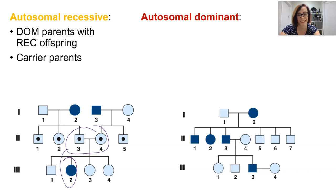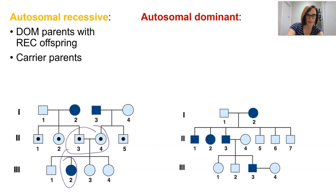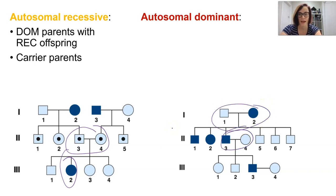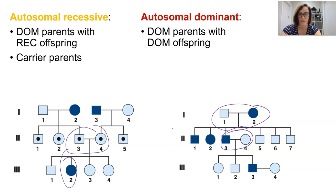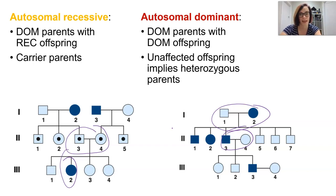In autosomal dominant inheritance, you'll see something similar, but since the affected trait is the dominant trait, we'll see parents that may themselves be dominant, and we will have dominant offspring as well. It's still possible to have an unaffected offspring, and that implies that the parents have a heterozygous genotype.